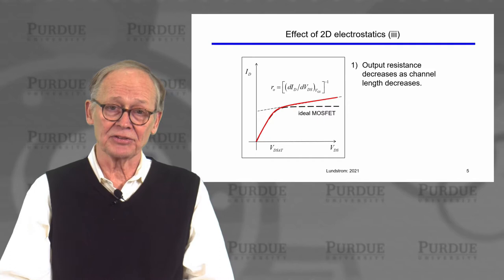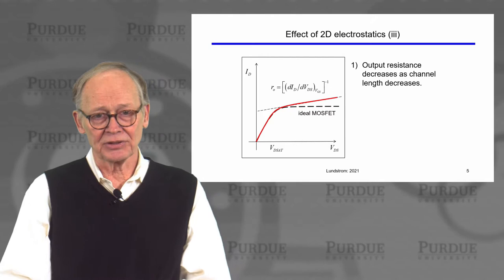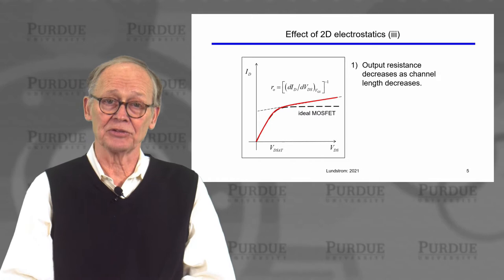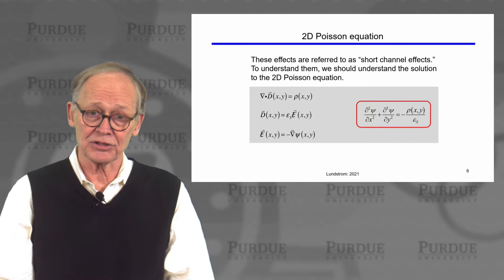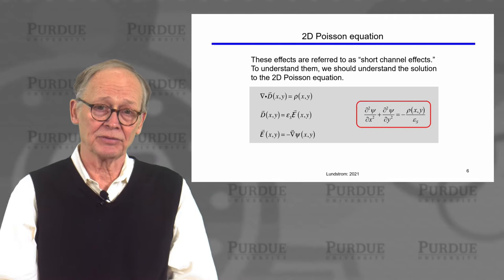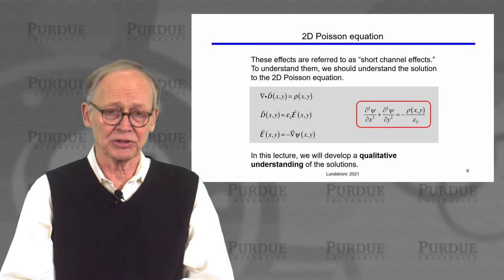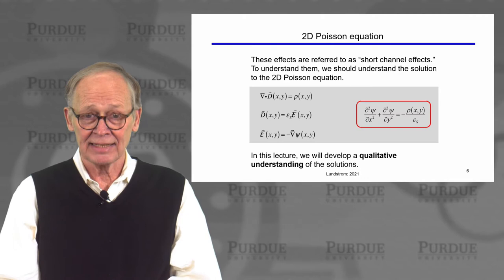Another effect of two-dimensional electrostatics is finite output resistance. In an ideal or very long channel MOSFET, drain current saturates and the output resistance — one over the slope — would be infinite. In real structures, there's some finite slope, and as we decrease the channel length, that slope gets steeper and the output resistance gets smaller. All of these effects come from solutions to the two-dimensional Poisson equation. Numerical simulation programs do this, and device design engineers use them to minimize these effects.